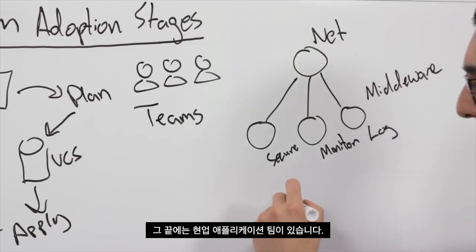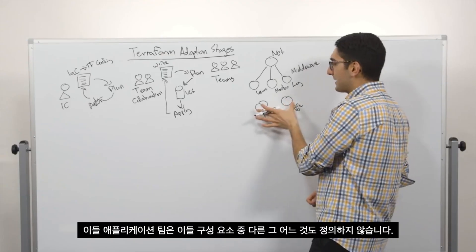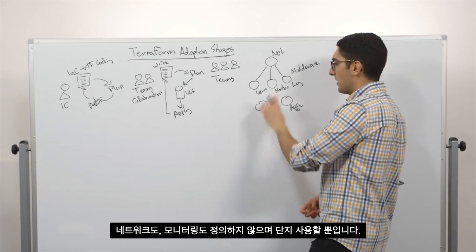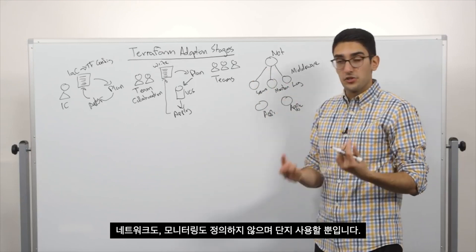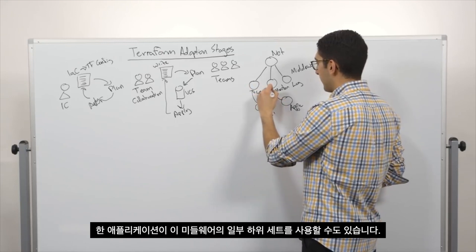Then at the edge, you have your actual application teams. So we have app one and app two as an example. And these applications are not defining any of these other components. They're not defining the network. They're not defining our monitoring. They're simply consumers of it.